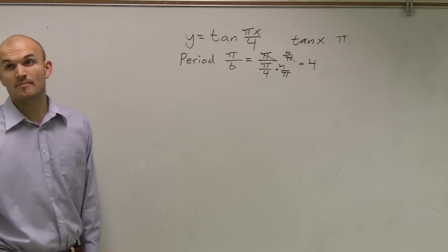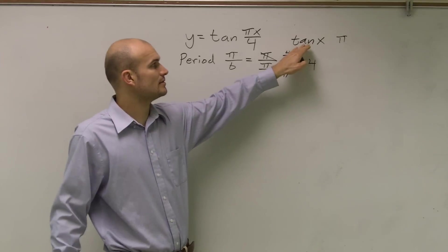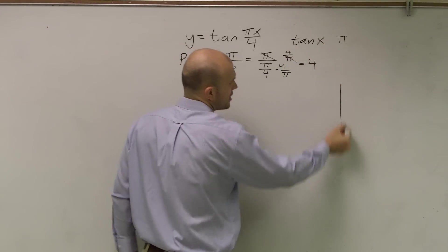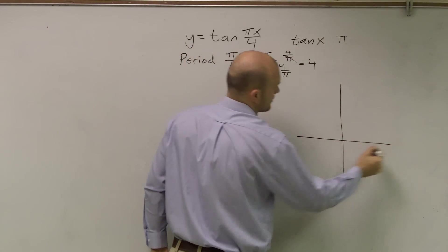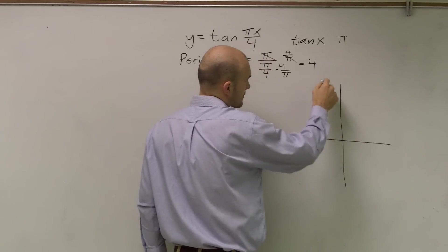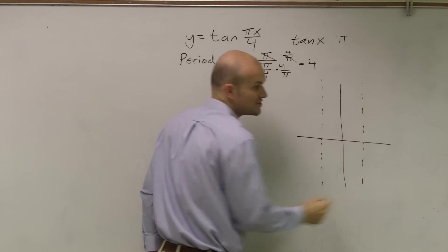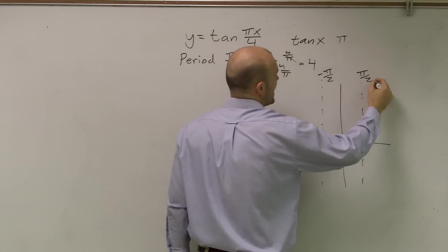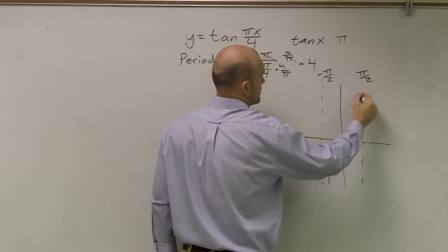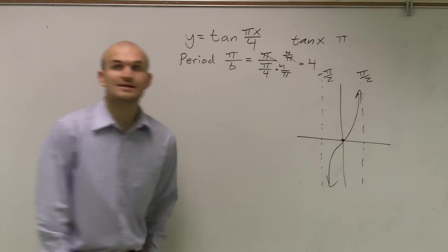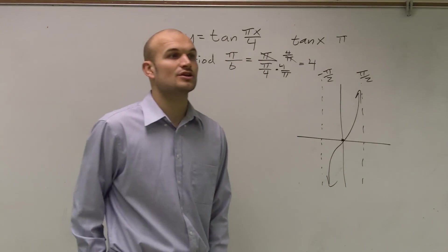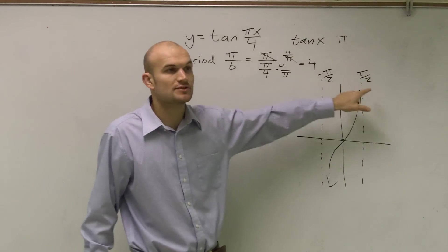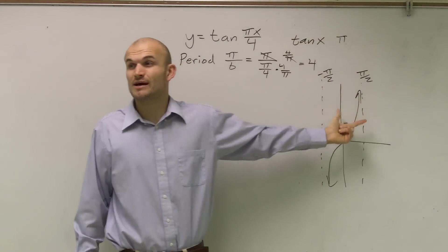So the other thing you need to remember about when we talked about our parent graph, it has a period of π. The other thing we need to remember, and I'll just maybe draw a little quick graph of it. Remember, the parent graph has two asymptotes. Asymptotes are negative π over 2 and π over 2. Ladies and gentlemen, if you're going to be graphing tangent and cotangent, you're going to have to know that for tangent, your two asymptotes are at negative π over 2 and π over 2. You're going to have to have that memorized.